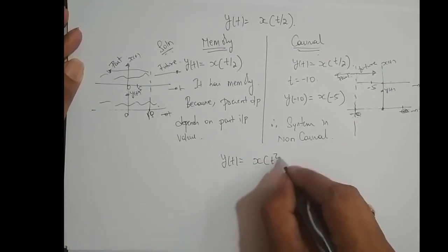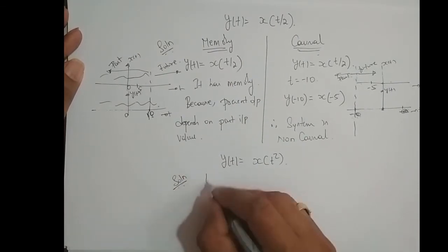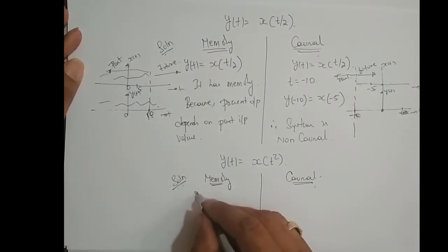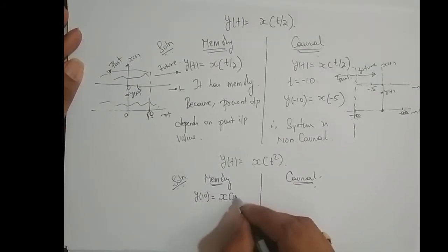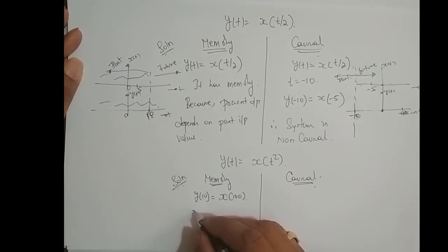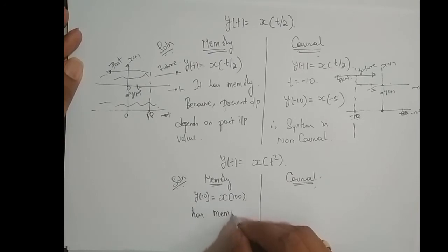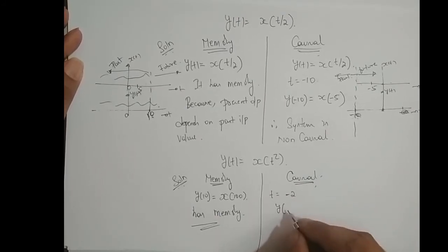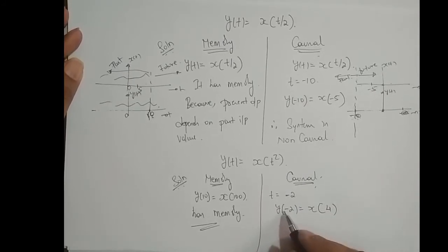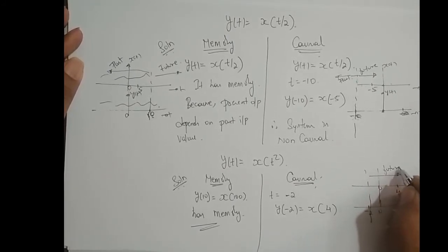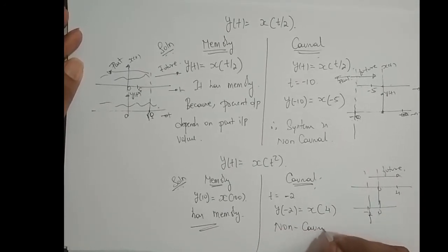Next example: y(t) = x(t²). Checking memory: if t = -2, y(-2) = x(4). Present output at -2 depends upon future input at 4. Therefore, the system has memory. For causality: y(-2) = x(4), so present output depends upon future input value. Therefore, the system is non-causal.